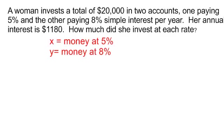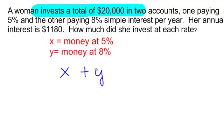So I'm going to let X equal the money that she is going to put at the 5% rate and Y is going to equal the money that she will put at the 8% rate. So I need two equations. Well, I know that the total money that she has is $20,000. So the money at the first place plus the money at the second place will equal her total investment of $20,000.